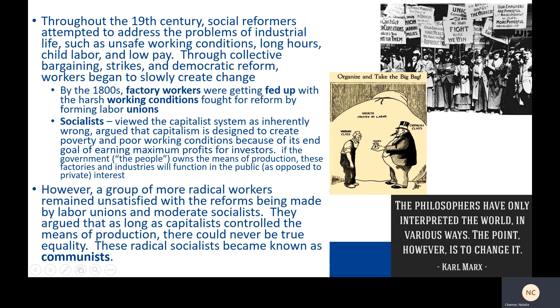However, a group of more radical workers remained unsatisfied with the reforms being made by labor unions and moderate socialists. They argued that as long as capitalists controlled the means of production — the stuff that you need to create finished products and produce wealth in industrial societies — there would never be true equality. These radical socialists became known as communists.